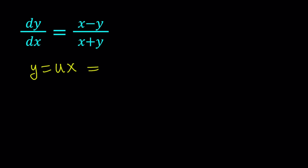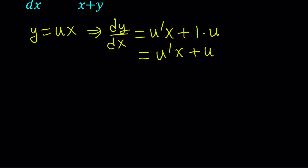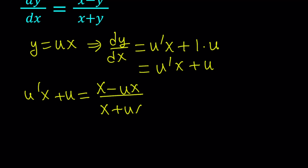Let's go ahead and do it. Let's differentiate both sides to find dy/dx. Since u is considered a function of x, we're going to differentiate it, and I'm going to write it as u prime multiplied by x, plus the derivative of x is 1 multiplied by u. You can write this as u prime·x plus u. Now let's replace that on the left-hand side: u prime·x plus u. And on the right-hand side, we're going to get x minus ux divided by x plus ux.